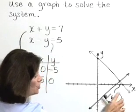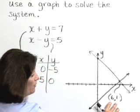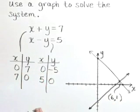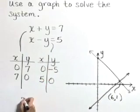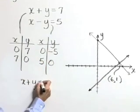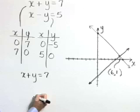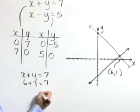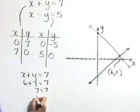But we need to go ahead and check that, especially when we're solving a system by graphing. So let's check that proposed solution in both equations. Starting with our first equation, X plus Y is equal to seven. If X is six and Y is one, then we definitely get a true statement.